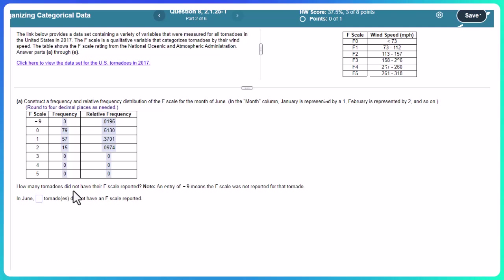Okay, how many tornadoes did not have their F scales reported? So an entry of negative 9 means that the F scale was not reported. So negative 9, so that means in June, 3 were not reported.